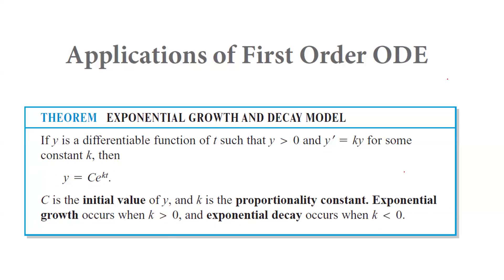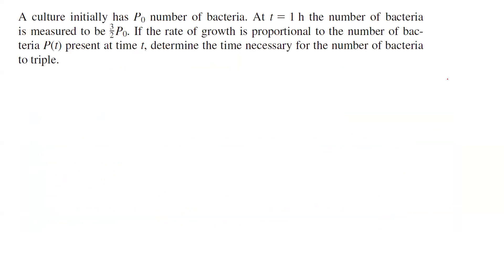Let us take a look at one example together. In this example, a culture initially has p sub zero number of bacteria. At t equals one hour, the number of bacteria is measured to be three halves of the initial population p sub zero. If the rate of growth is proportional to the number of bacteria, denoted by function p(t), determine the time necessary for the number of bacteria to triple.